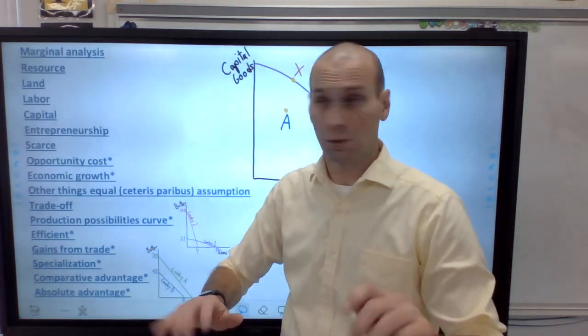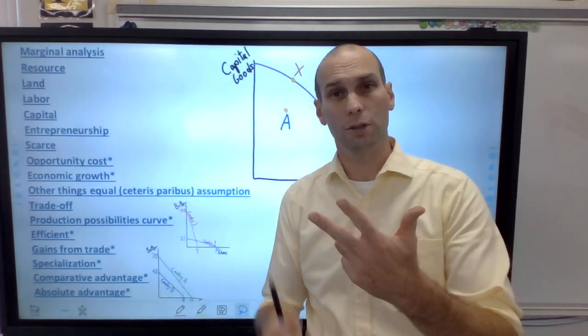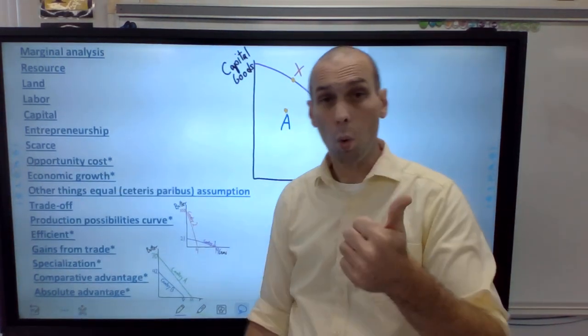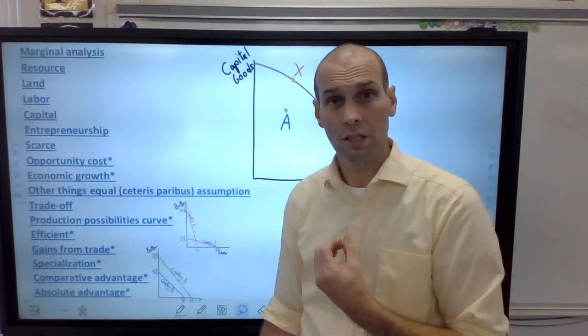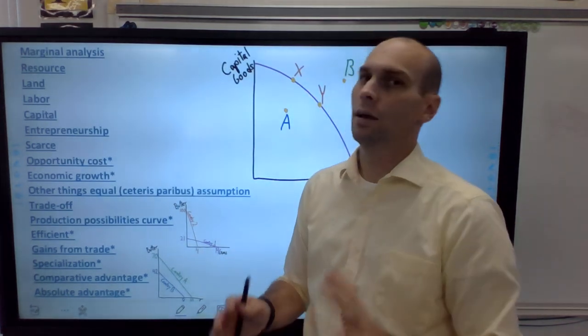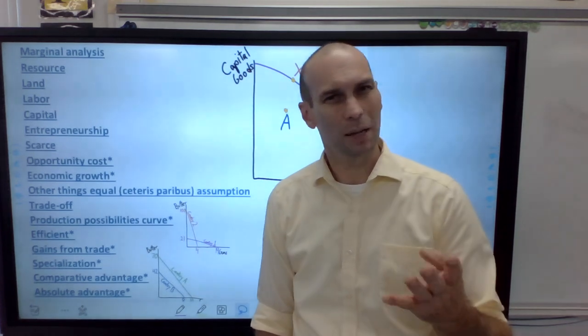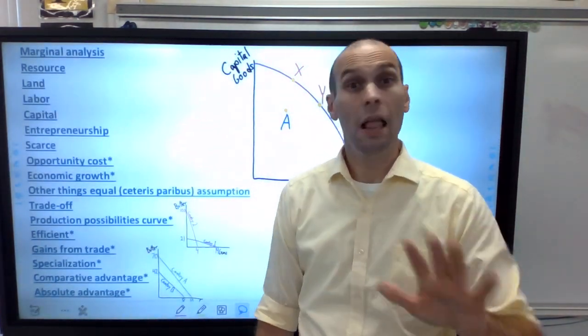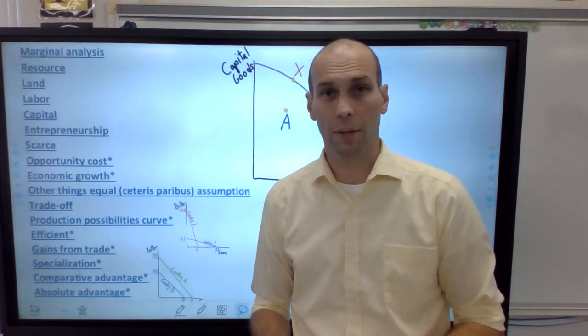So when we cover the three factors of production, land, labor, and capital are the big three. They're the big three because we can produce or use more land, labor, and capital. If I'm a producer, I can buy more natural resources, hire more labor, employ more capital. But entrepreneurship is a fourth factor. It's a special one that we won't talk about a whole lot because it's not very measurable, but it is still very important.